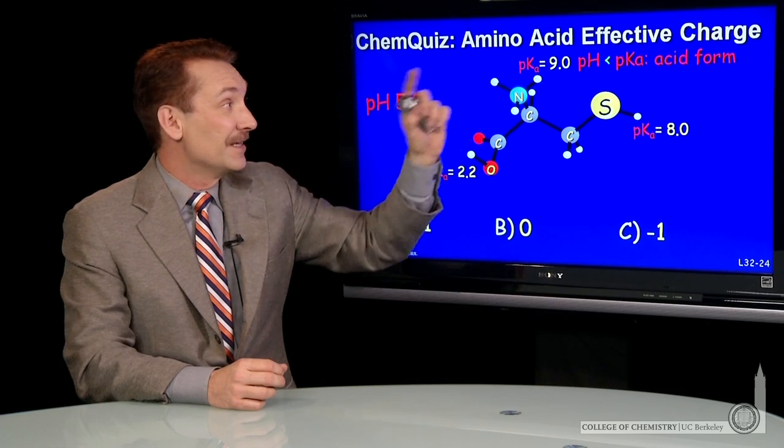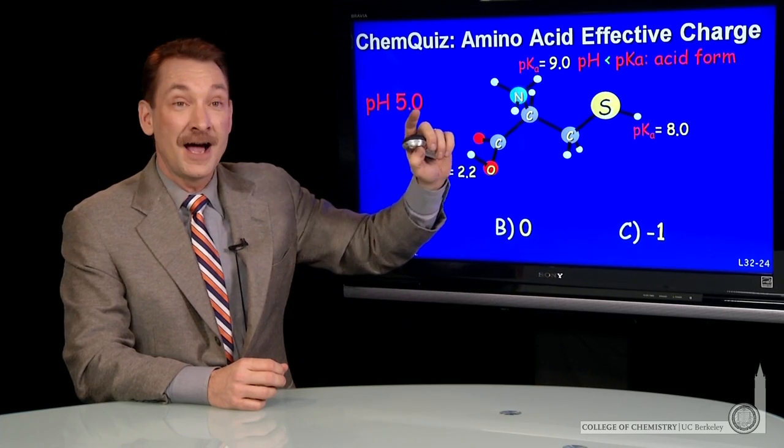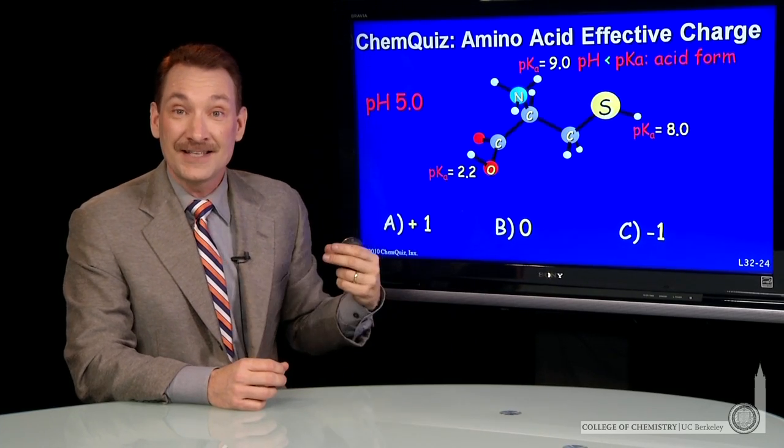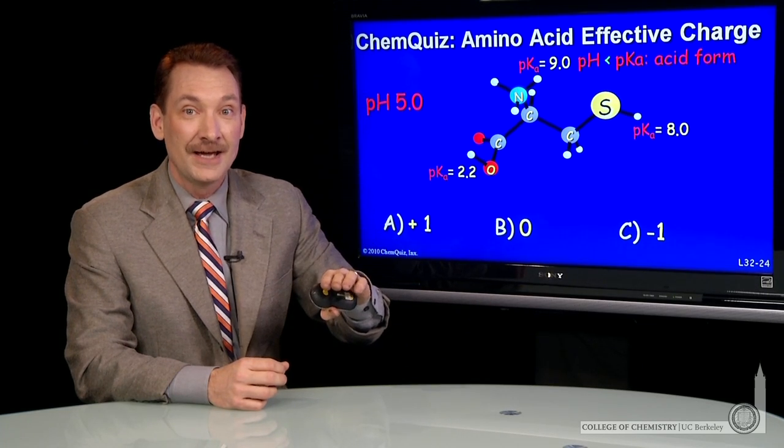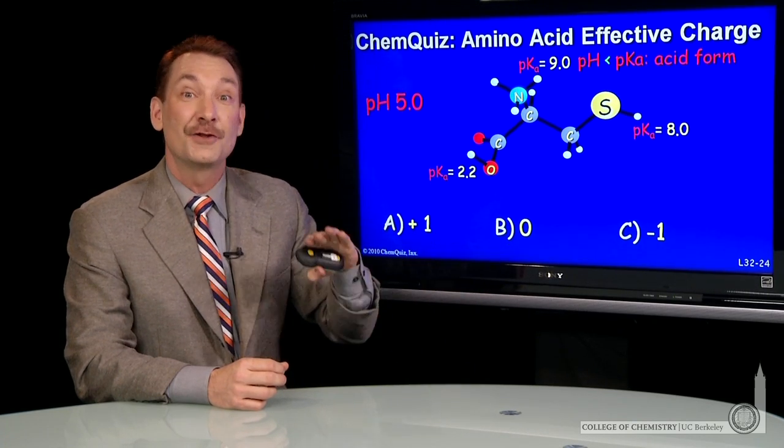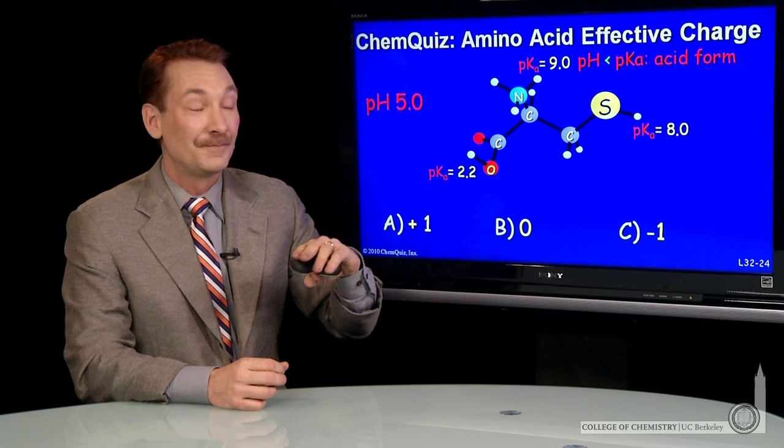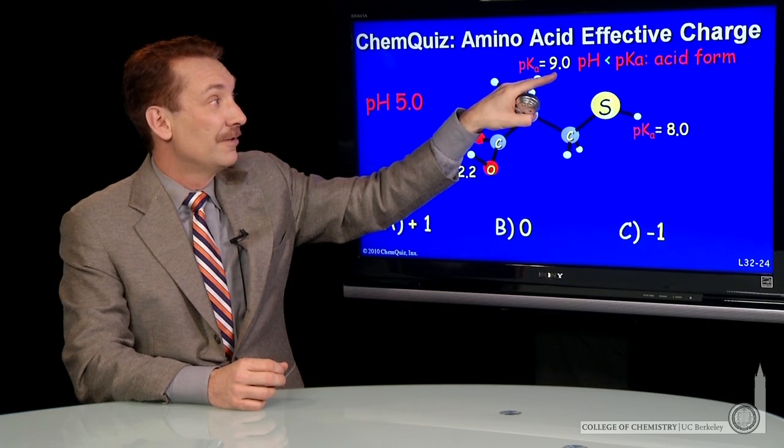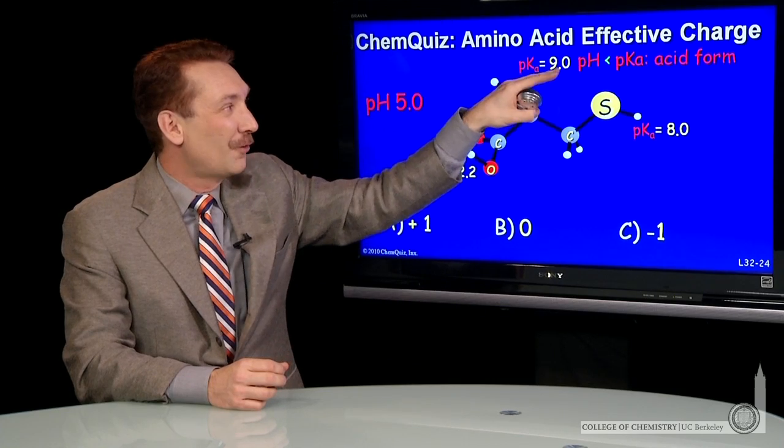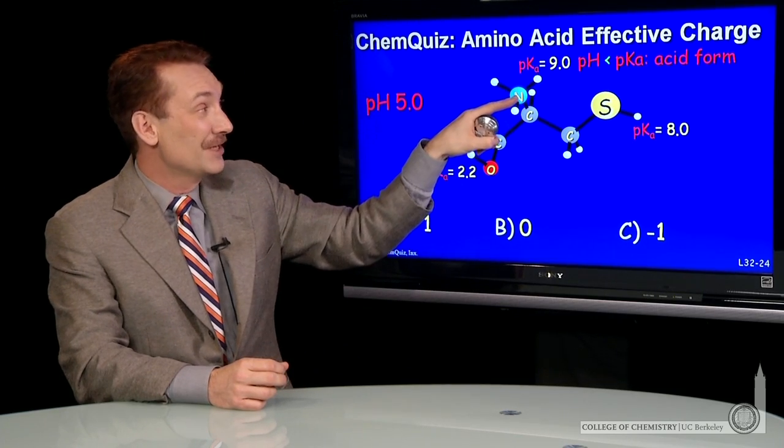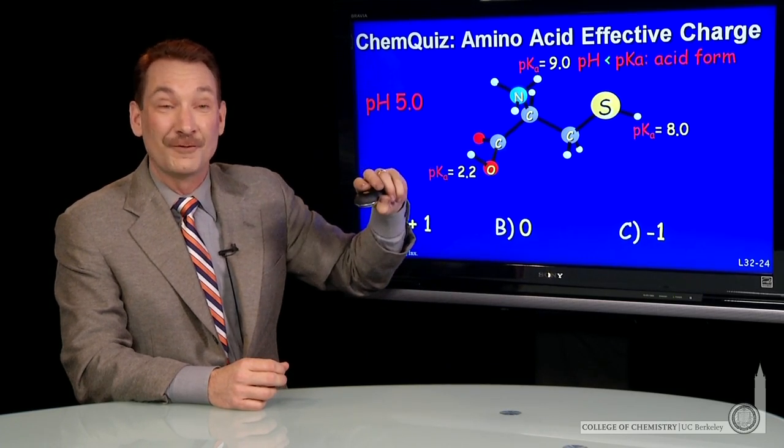So for instance, here the pKa is 9, so the pH is less than the pKa. If the pH is less than the pKa, you're on the acidic side, so the acidic form predominates. In fact, you're four units away from this. So you're four units to the acidic side. So this is all in its acidic form.